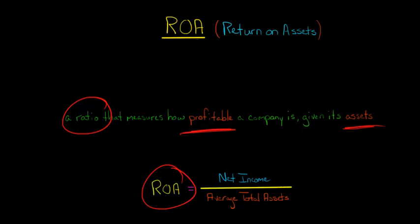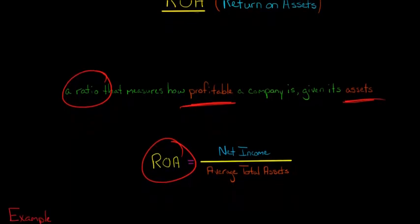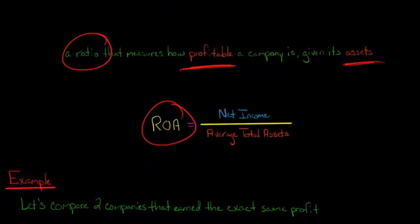So we would calculate ROA by taking a company's net income, and that would be the bottom line on its income statement, divided by the company's average total assets. Let me give you an example of why ROA is important, and I'll show you how to calculate it in the process.